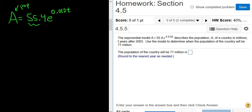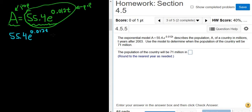This whole thing, A, is the population. We want the population to be 71 million, so we set this equal to 71 and solve for T. So 55.4e to the 0.012T equals 71.